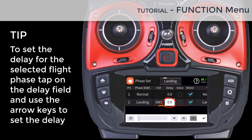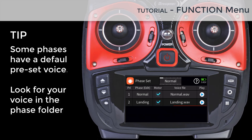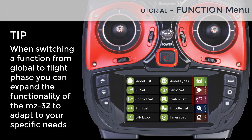The delay function determines how long it will take for a phase to become active. You can add for each phase its own unique voice, as well as determine if the motor will be active at that phase or not. After setting up all your flight phases, you can go back to the base menu and assign each phase to a function.